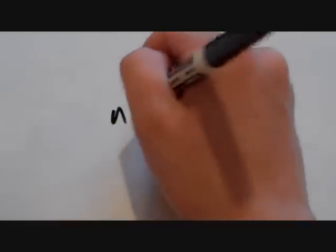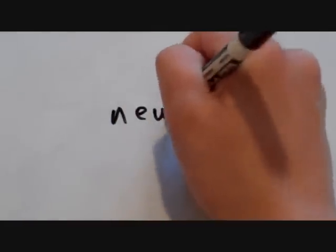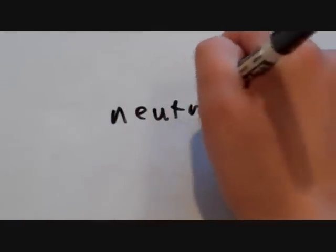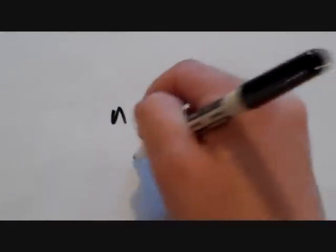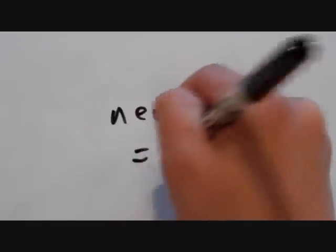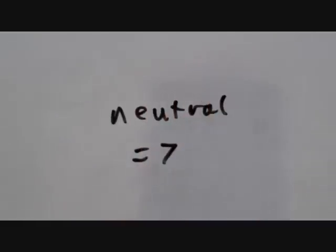A neutral is anything with a pH of 7. An example would be pure water.